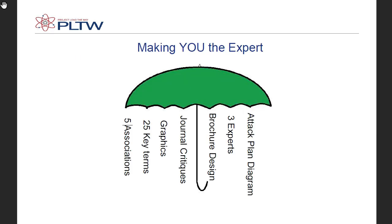Take a moment to update your umbrella diagram. At this point, to become an expert, you should have five associations. Let's expand the key term list to 25 — I would suggest making this a glossary to help you build your vocabulary related to your topic. You have some graphics in your brochure, some journal critiques you've collected, a brochure you designed, an attack plan diagram, and now we're reaching out to three experts.